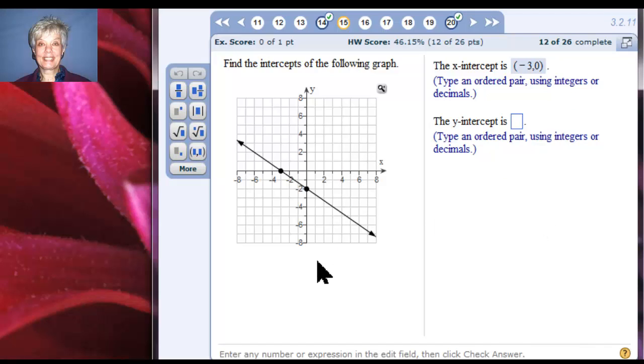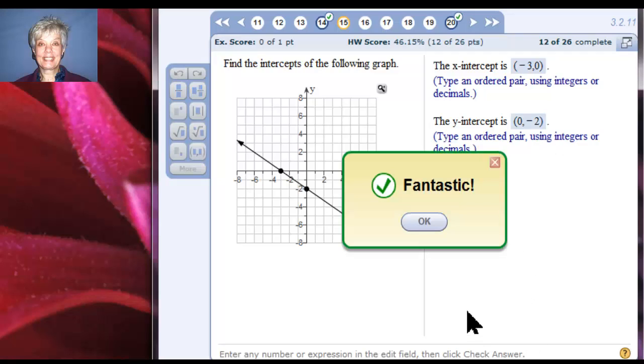Excellent. All right, now the y-intercept is where the graph crosses the y-axis. That looks to me like y equals negative 2. Well, on the y-axis, x equals 0. So when I write this as a point, which is how I have to write it, an ordered pair, 0, comma, negative 2. Notice the blue lettering. You always want to watch that. It's telling you how to answer. Type an ordered pair using integers or decimals. Well, we don't have to use decimals. We can use integers. Okay, did it tell me I'm right and brilliant? Not yet. Okay.